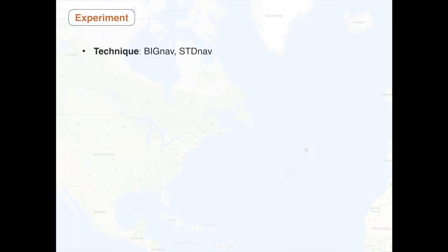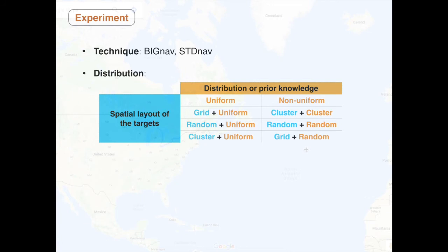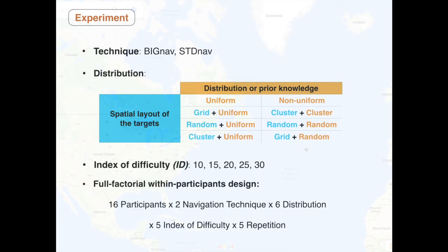We conducted a controlled experiment comparing Big Nav with standard navigation for several distributions of targets and prior knowledge, and several indices of difficulty. The goal of the task is to pan and zoom to reach the target in the completely zoomed-in view. We illustrate three conditions.